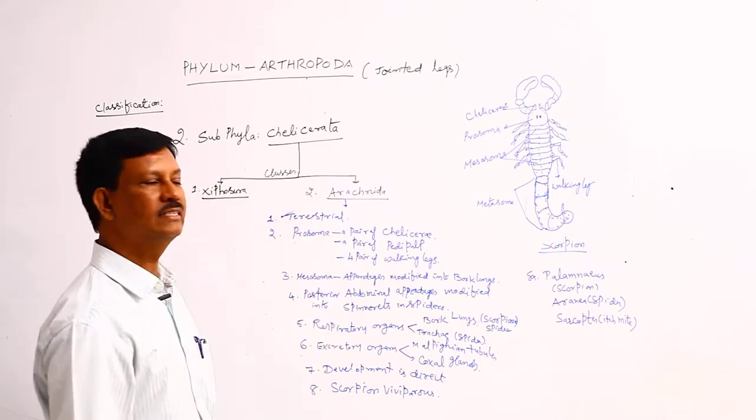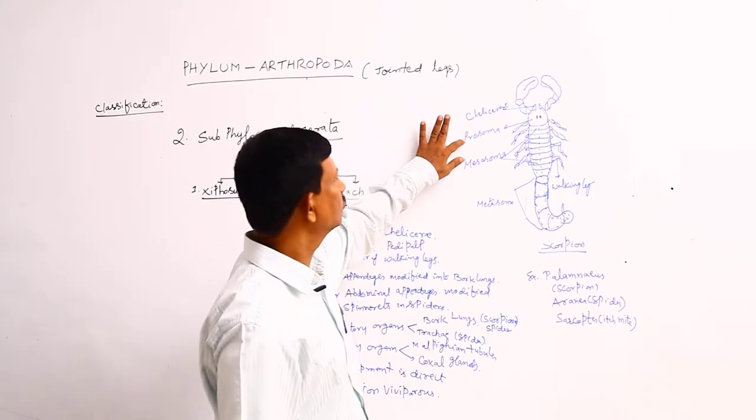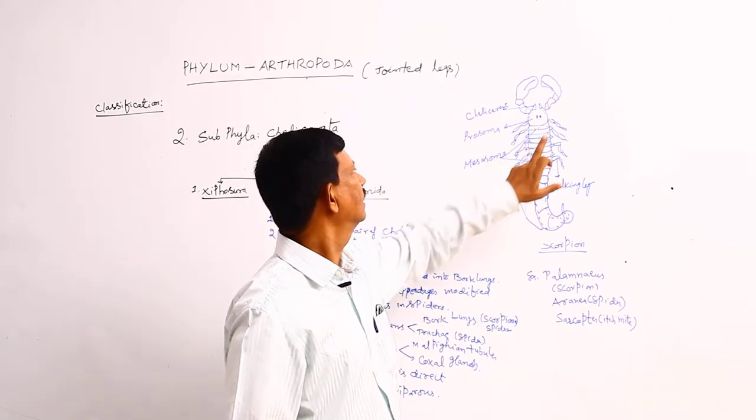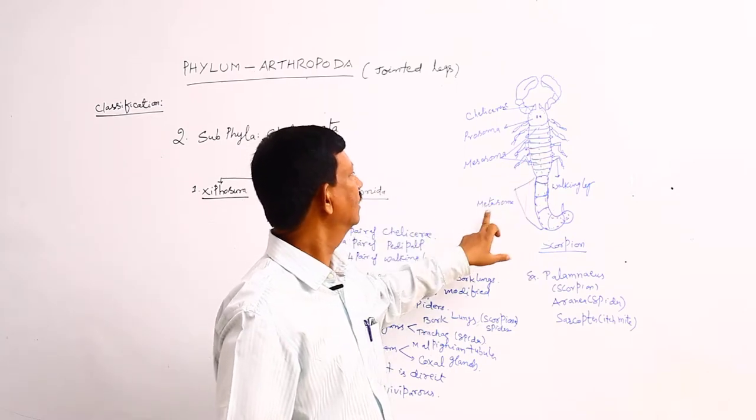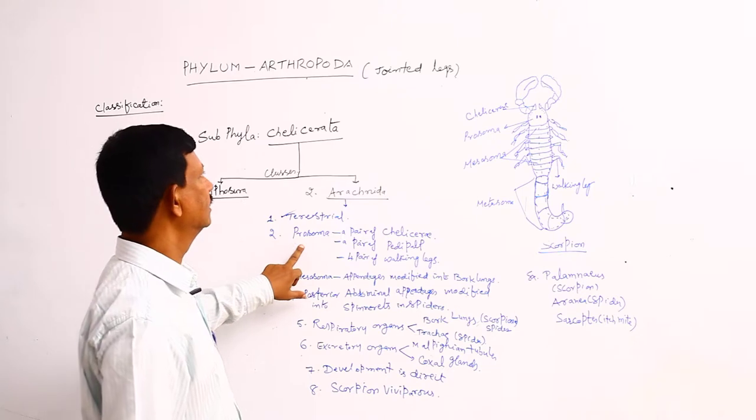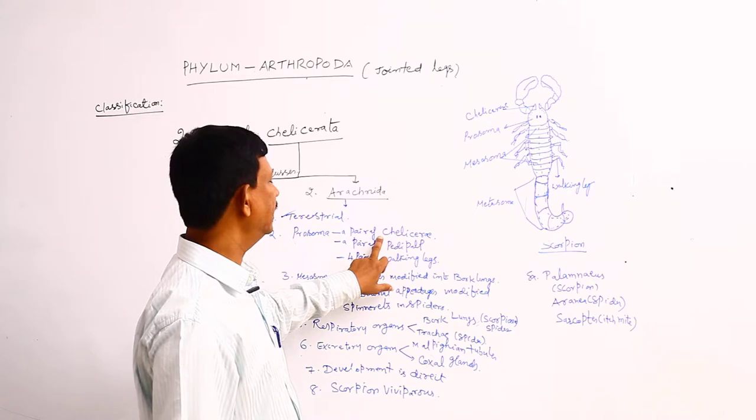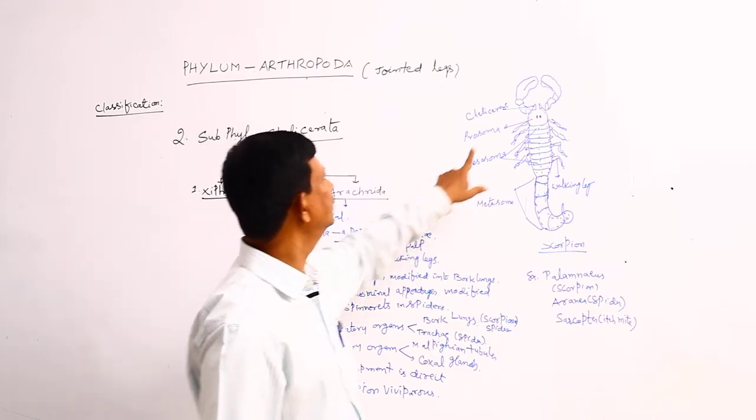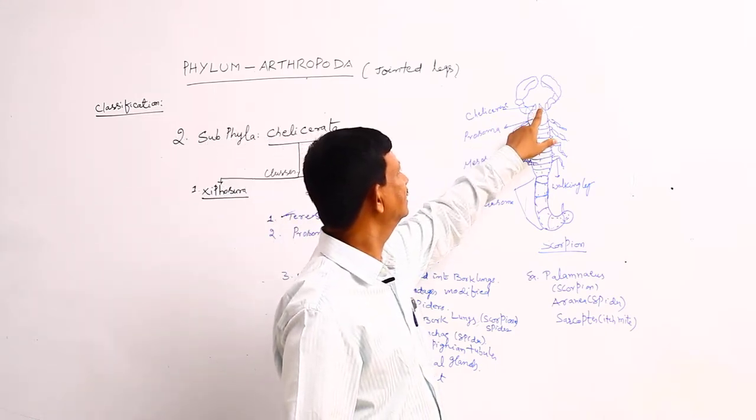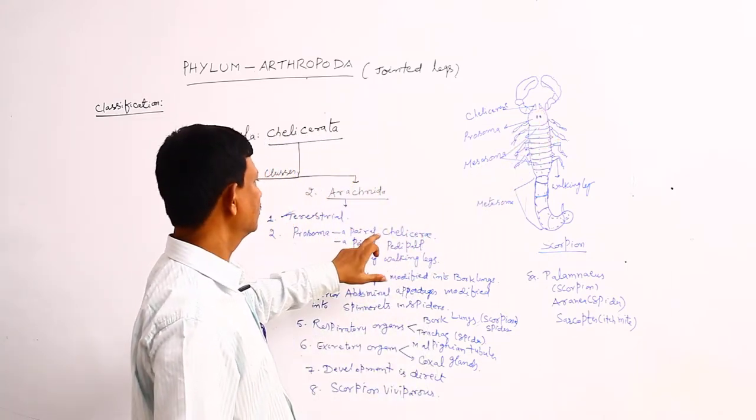The body is divided into three parts: prosoma, mesosoma, and metasoma. In prosoma, at the anterior region, a pair of appendages are modified into chelicera. This one pair is present at the anterior end of the body.